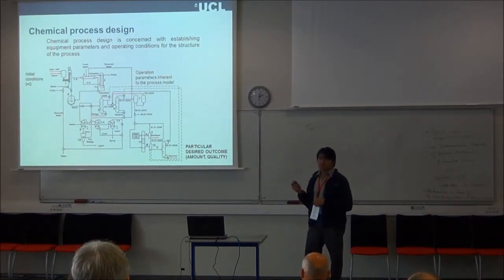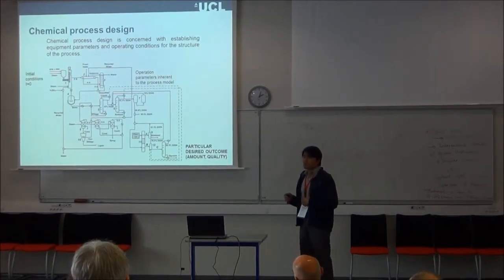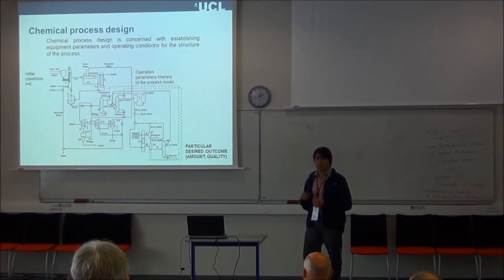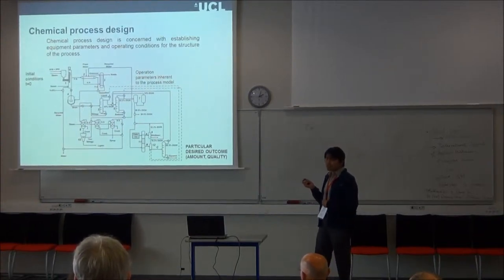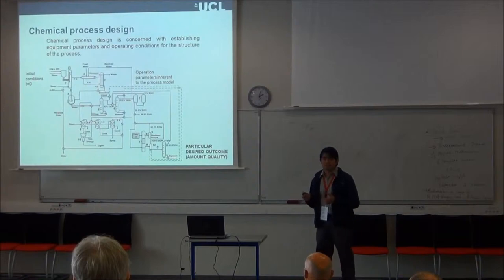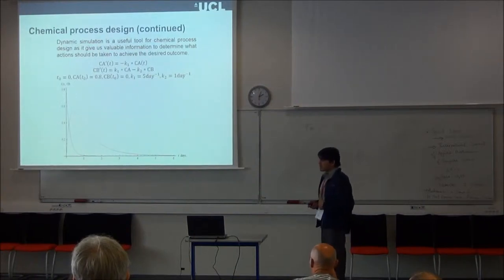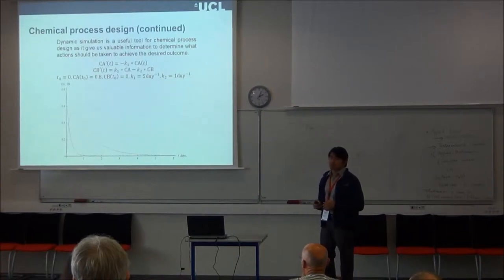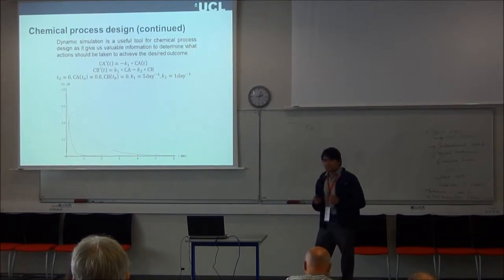It is worth mentioning at this point that the desired outcome may lie into a certain range. For example, we may want product purity from 95% to 99% or something. So if we want this range of output, we will have some range of parameters and probably some range for initial conditions.